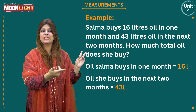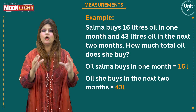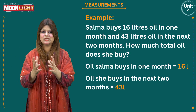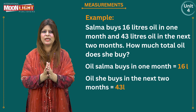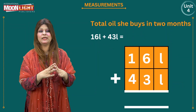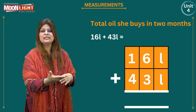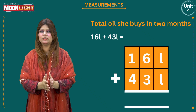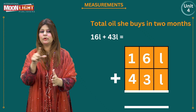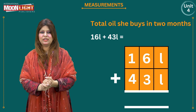From the question part: How much total oil does she buy together? Now I am going to write the third statement: Total oil she buys in two months is equal to — and here you write the plus sign and draw a line for the solution.